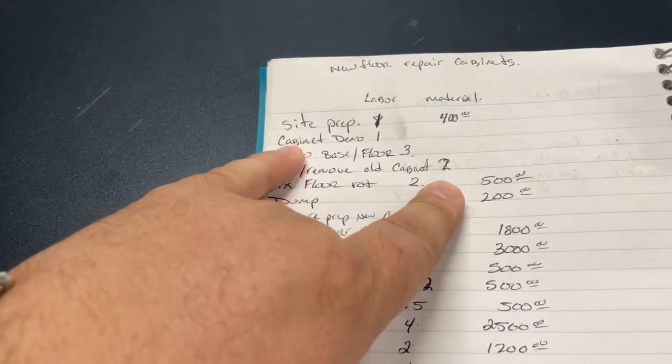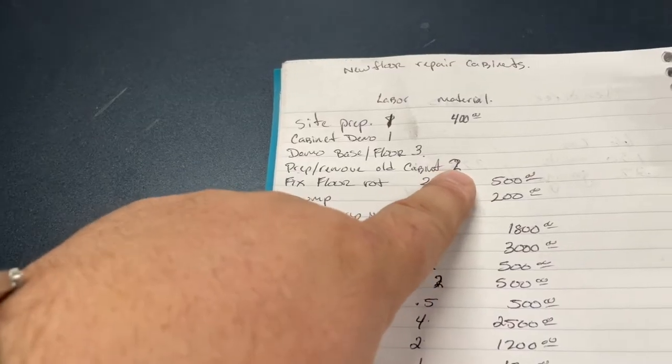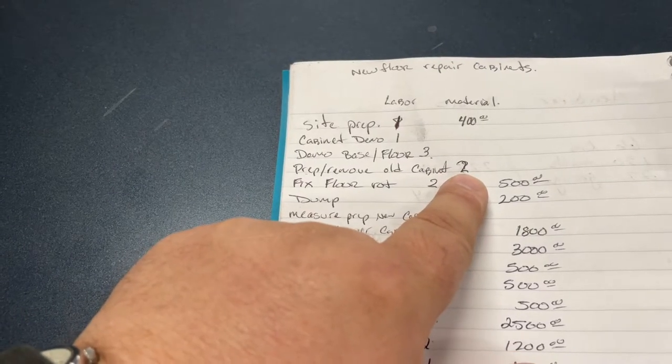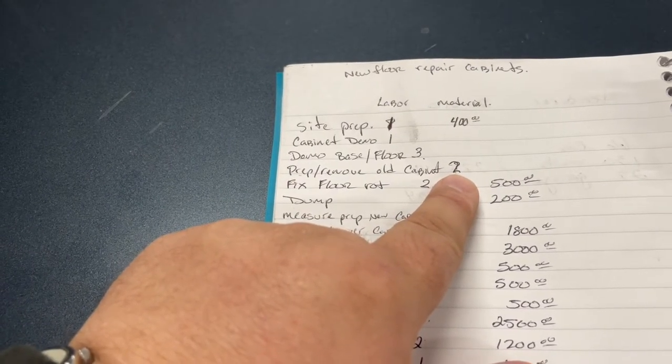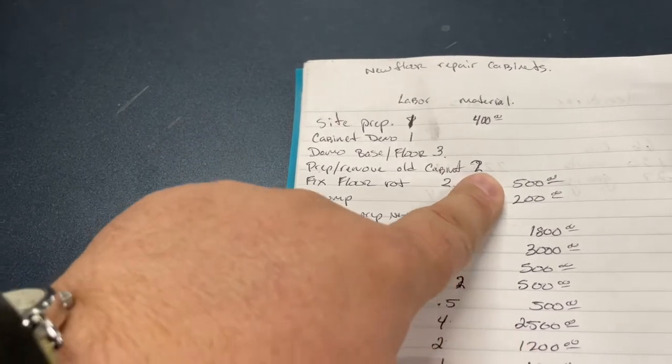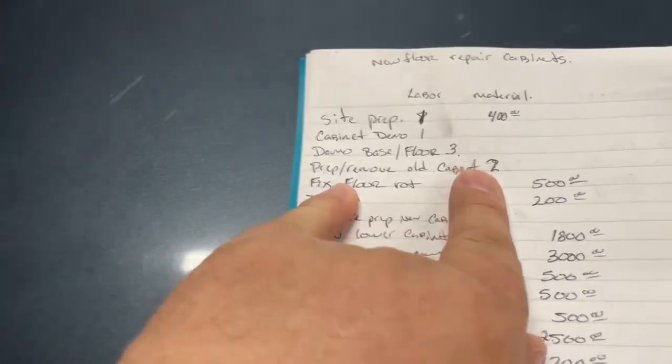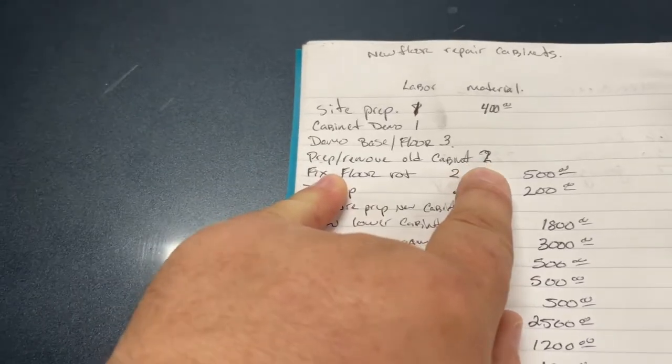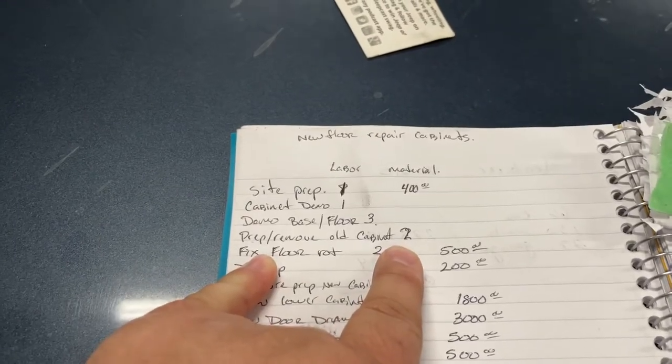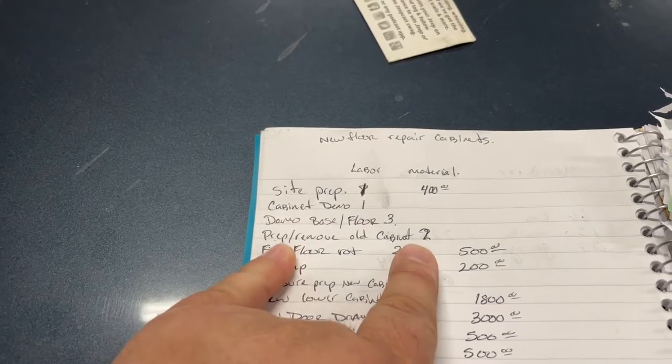Prep and remove old cabinet. So I have that down twice because this cabinet demo is just that one cabinet. This cabinet demo is going to be all the drawer faces, all the cabinet doors, all the hardware, getting all of that stuff taken off and set aside. And this is slow process because we don't want to damage any of the cabinet faces and we don't want to damage any of the drawer boxes or anything like that. So that's a real slow process.